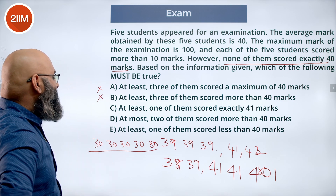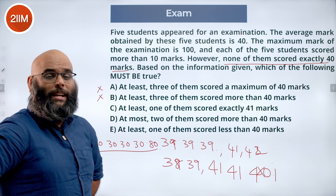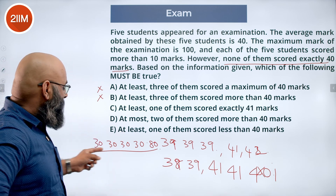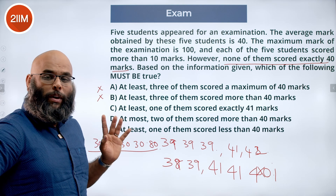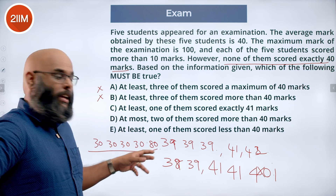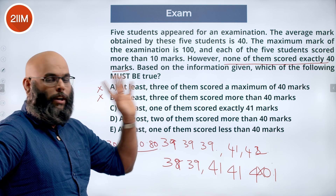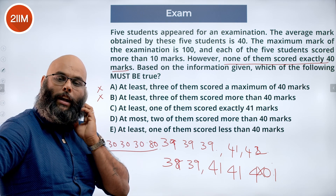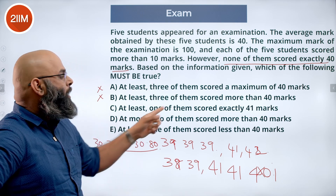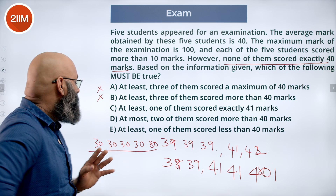The third option says at least 1 of them scored exactly 41. We cannot say that either. Using the same example — 30, 30, 30, 30, and 80 — we have a valid scenario where no one scores 41. So we cannot conclude that at least 1 of them scored exactly 41. Not true.